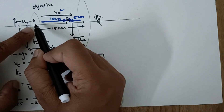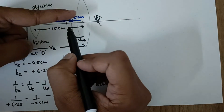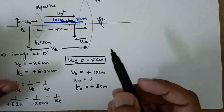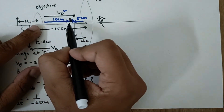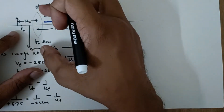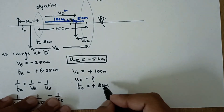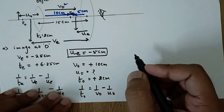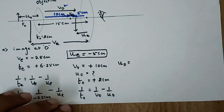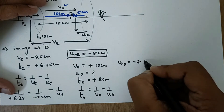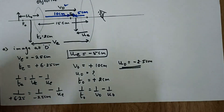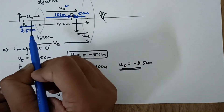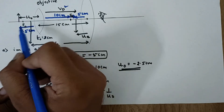The image distance v_o is measured from the optical center in the direction of the refracted ray, which is in the direction of the incident ray for the objective, so v_o is positive. We do not pre-assign a sign to u_o since it is the unknown. Applying the lens formula with v_o = +10 and f_o = +2, we get u_o as minus 2.5 centimeters. This is the answer to the first part. Notice that the object distance is just slightly beyond the focal length, as expected for a compound microscope.